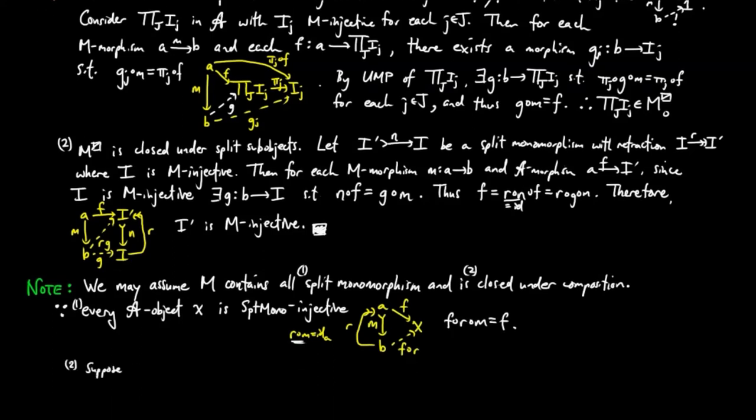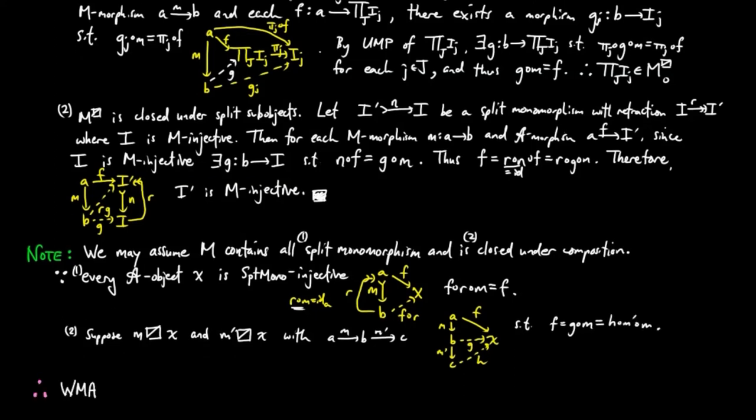Suppose M lifts to X and M' lifts to X with M and M' composable, then we see that M'M lifts to X as well. Therefore, we may assume that M is a subcategory of A containing split monomorphisms.